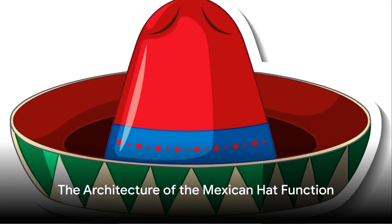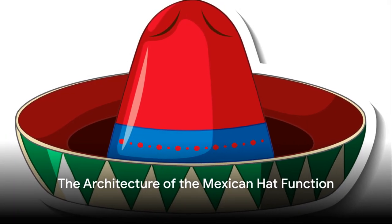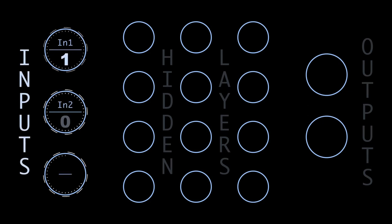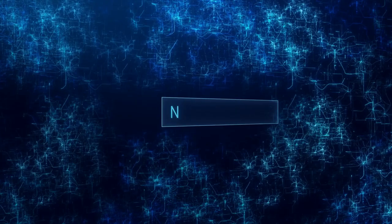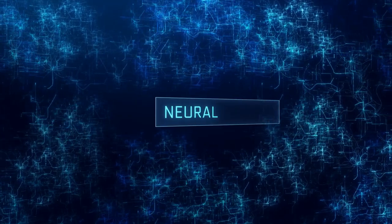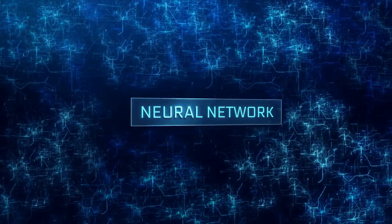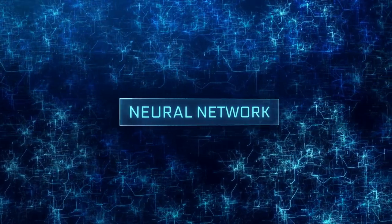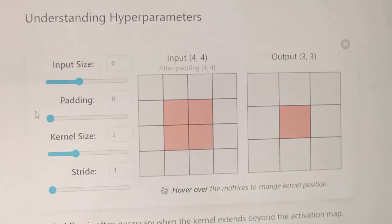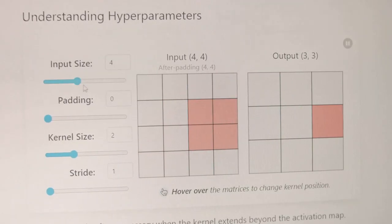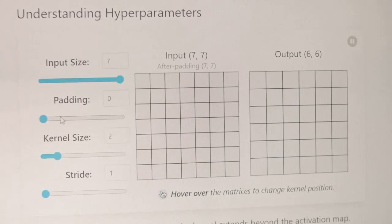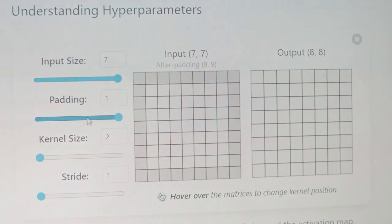The architecture of the Mexican hat function is fascinating. It begins with an input layer, which receives the initial data. This data is then passed through a hidden layer, which contains the neurons that process the data using the Mexican hat function. The output of these neurons is then passed to an output layer, which provides the final result.